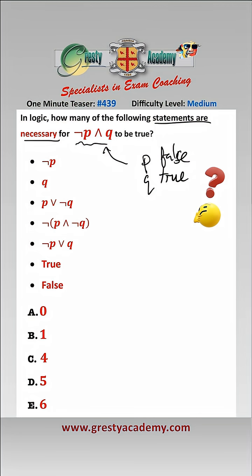In order that the conclusion is true, if not P and Q is true, well then not P must be true because P is false, so this one is necessary. For number two, if not P and Q is true, Q must be true, so therefore this one is necessary.